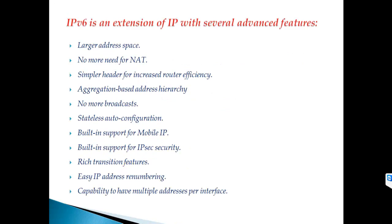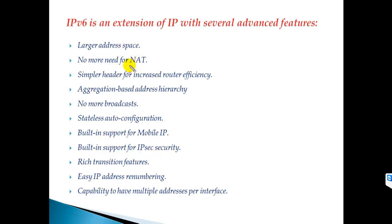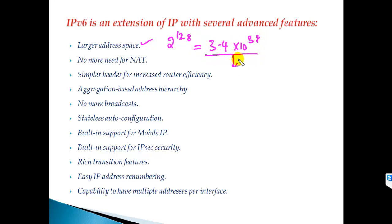Before moving on to IPv6 addressing, let me give some advantages, extensions, and features of IPv6 compared with IPv4. IPv6 provides a very large address space — 2 to the power of 128 addresses, which is approximately 3.4 × 10^38. That means almost every human can get a single IPv6 address, and even if the internet grows more than double every year, we can survive for the next 50 years without any shortage of IP addresses.